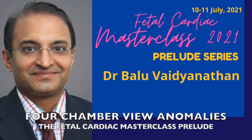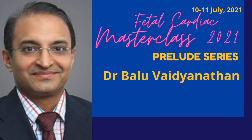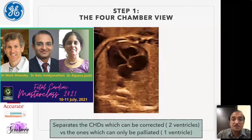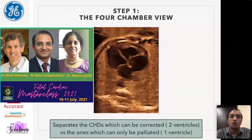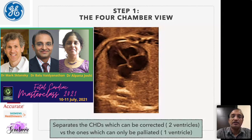The first step is the four-chamber view. For the purists, they will argue that there is something else before you even look at the heart — that is the abdominal situs. I do that and we should do that, but I am talking from a very basic perspective for the many people listening who can simplify the whole process and make sure that the anomalies we should not miss are not missed.